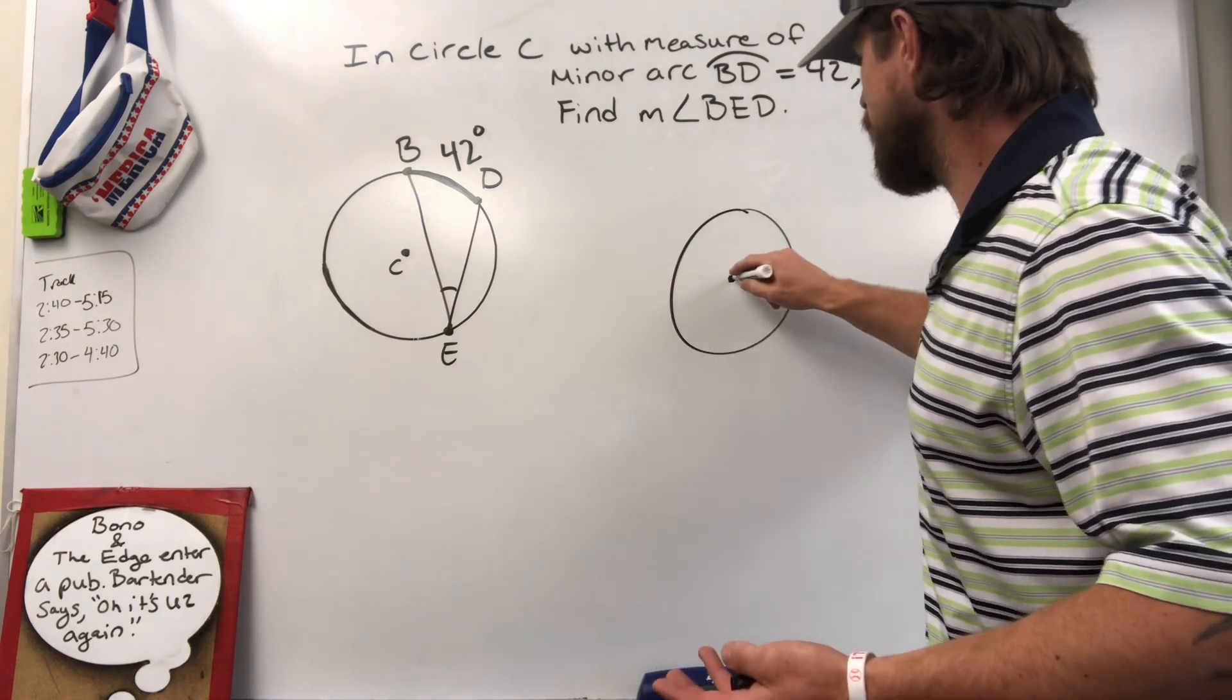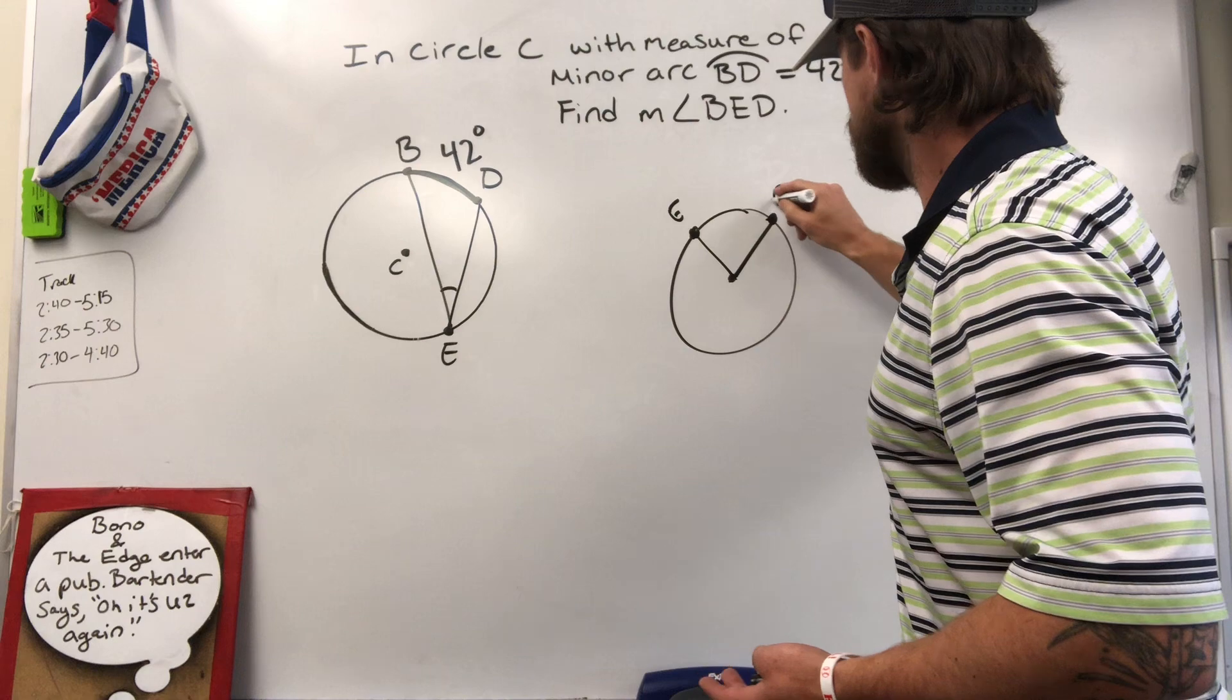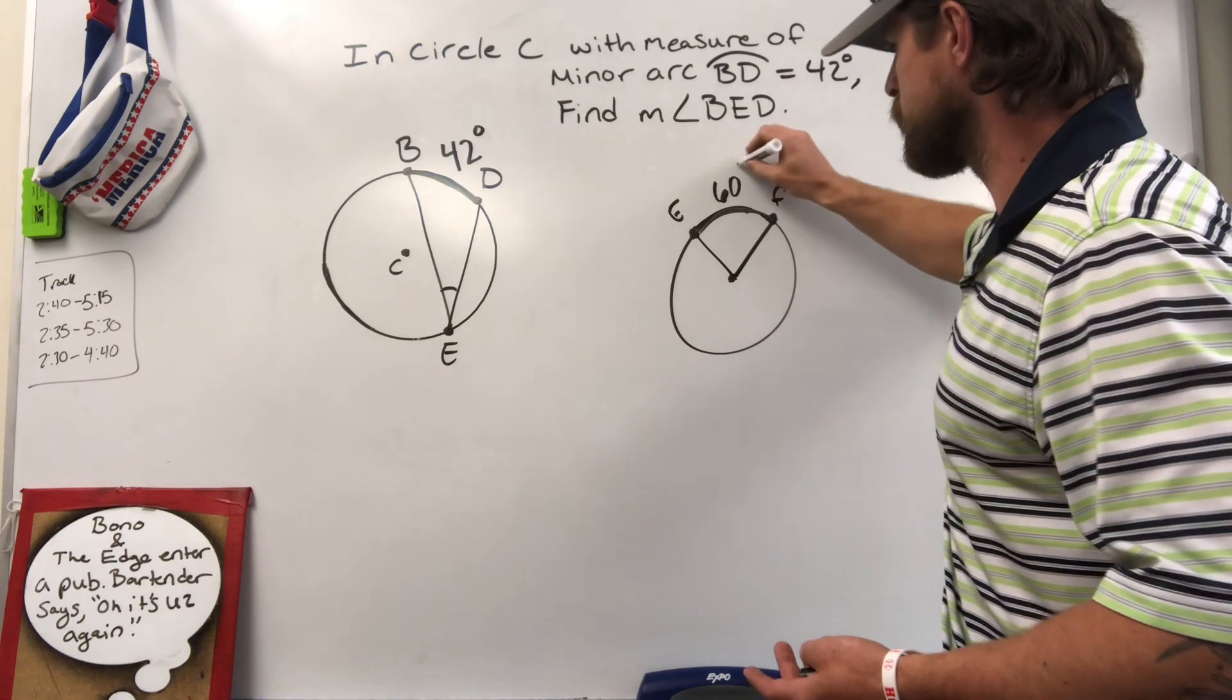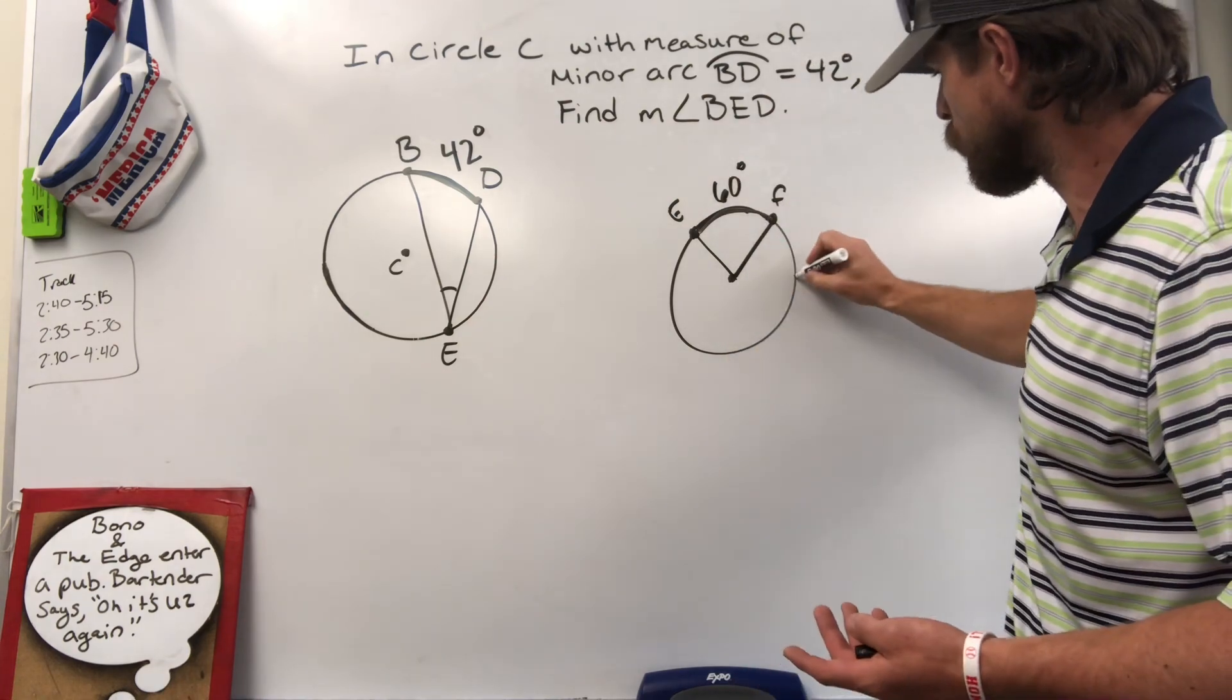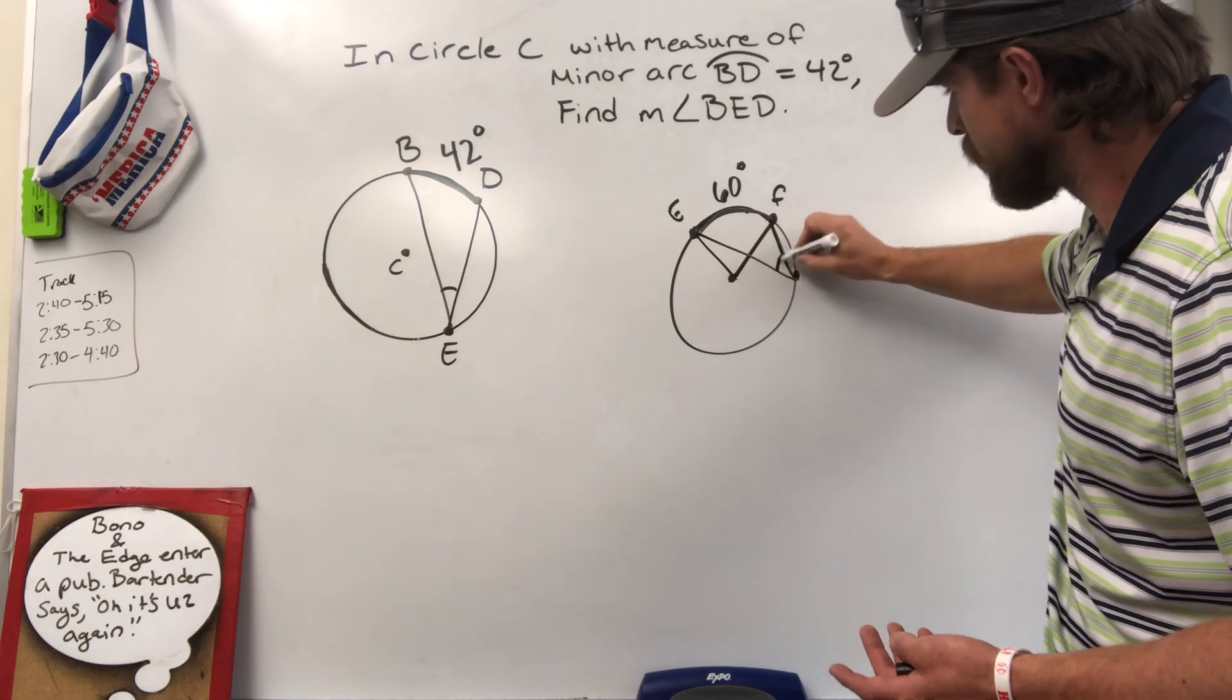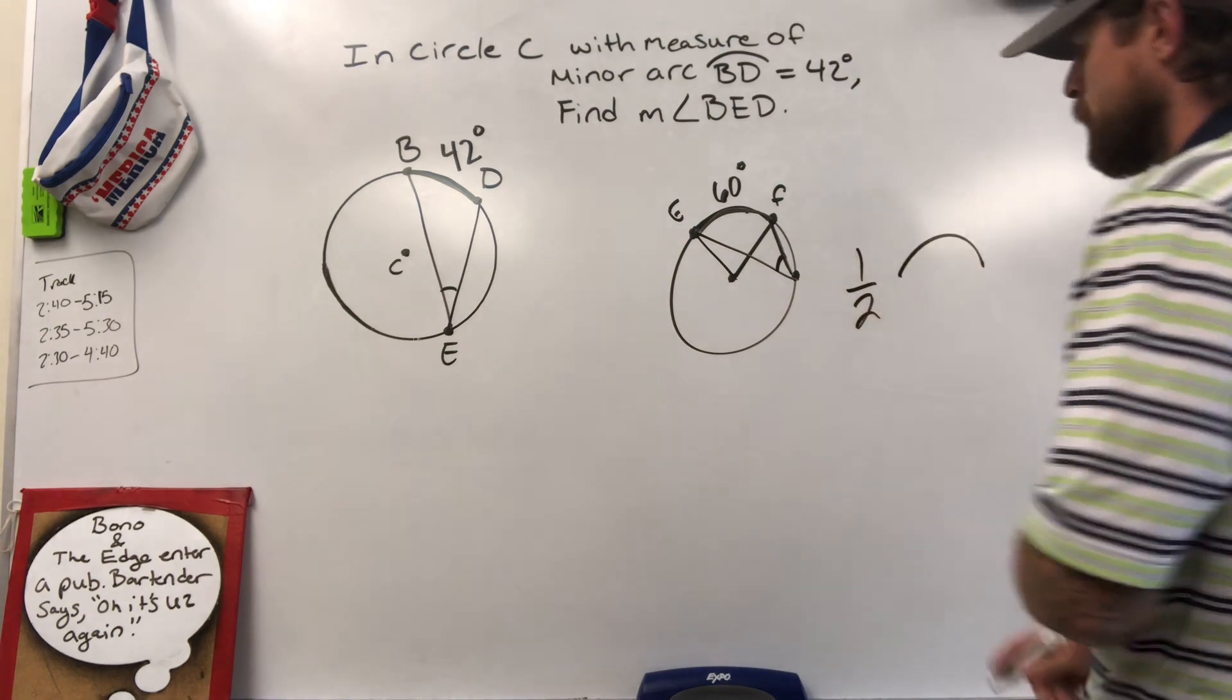So real quick, if I had EF, and I said that that arc measure is 60 degrees, but then I do an inscribed angle which is taking a chord like that from E and a chord from F to there and find this angle measure, our inscribed angle measure will always be one half of the arc measure.